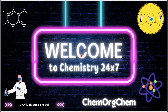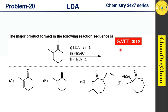Today's problem is from the year 2018. According to this problem, the substrate initially reacts with LDA, which then reacts with phenyl selenyl chloride, and finally reacts with hydrogen peroxide under heating conditions to produce the product. There are four options — let's find out which one is correct.